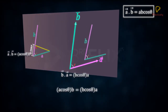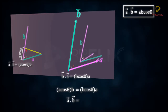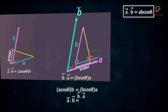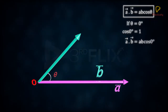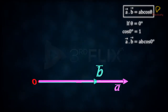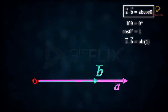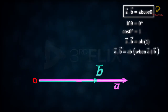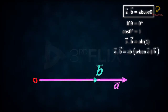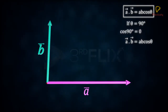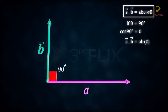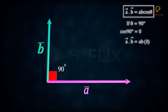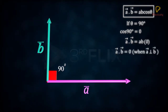Commutative law applies to dot product, so A·B is equal to B·A. If the angle between the vectors is zero, cos theta becomes one. Hence, the dot product of parallel vectors is equal to the product of their magnitudes. If the angle between the vectors is 90 degrees, cos 90 is zero. Therefore, the dot product of perpendicular vectors is zero.